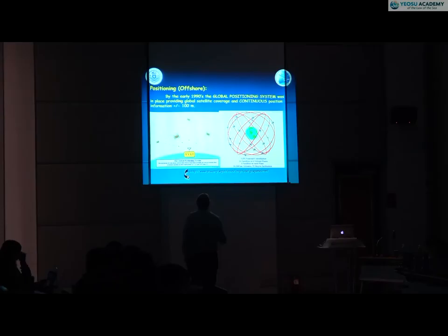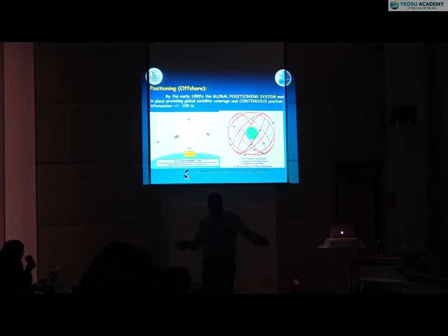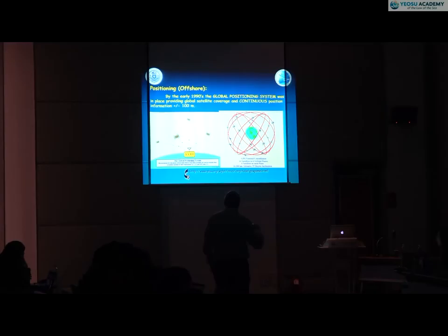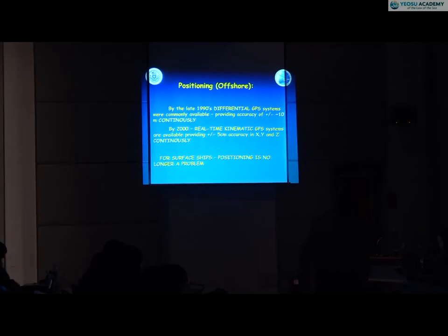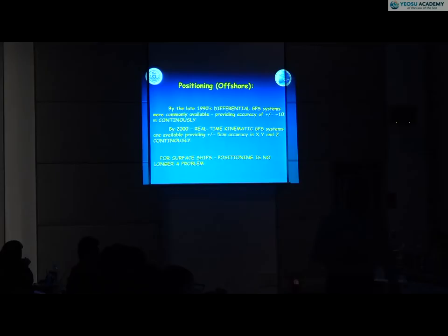By the 1990s, a huge constellation of satellites came up, providing the ability to continuously get measurements — just like GPS today. Suddenly you don't have to wait until noon to know where you are; GPS works all the time because there are so many satellites providing constant coverage, to an accuracy of about plus or minus 100 meters. In the late 1990s, a new type called differential GPS came along, allowing corrections that changed accuracy from plus or minus 100 meters to plus or minus 10 meters.